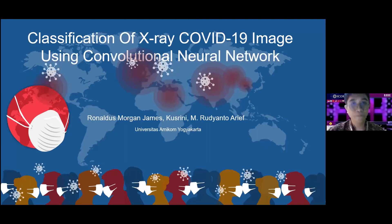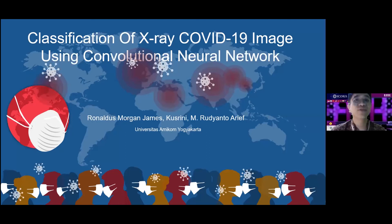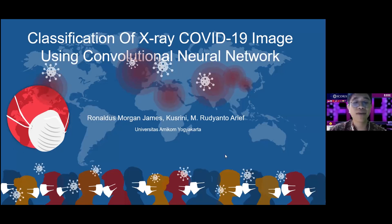Good afternoon ladies and gentlemen, I'm Roald Morgan James, a student from AMIKOM University Yogyakarta. Today I will present the paper on classification of X-ray COVID-19 images using convolutional neural network. This paper was written by me and my lecturers, Mrs. Kusrini and Mr. Muhammad. Let's get started.